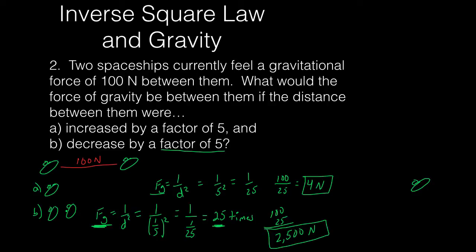Just as expected, if they get closer together the force of gravity goes up — and it goes up by quite a bit. If they decrease the distance by a factor of 5, they'll get 25 times more gravity than there was originally. Those are a couple of questions dealing with the force of gravity and the inverse square law.